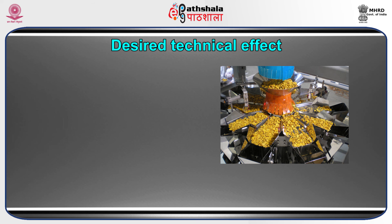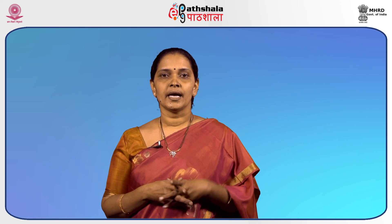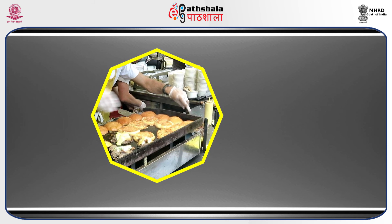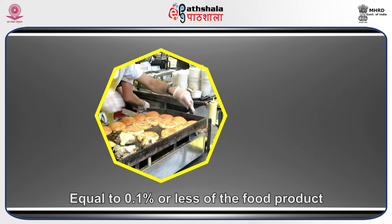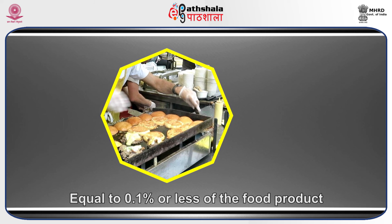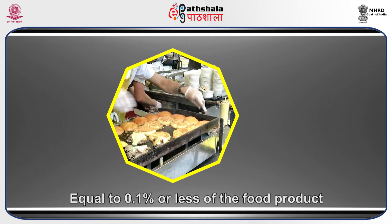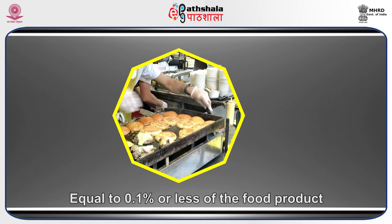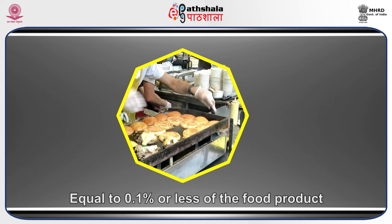The degree to which a desired technical effect is achieved by an enzyme can be controlled by modifying various factors such as dose, temperature, and time. A relatively small amount of enzymes is sufficient to accomplish a reaction, as enzymes are catalysts. For example, an enzyme preparation in most food uses equals 0.1 percent or less of the food product. Enzymes are generally destroyed during food processing and are not present in the final food product.